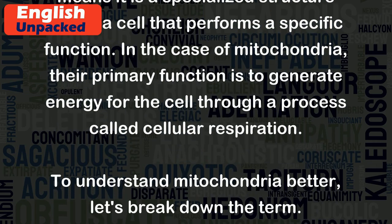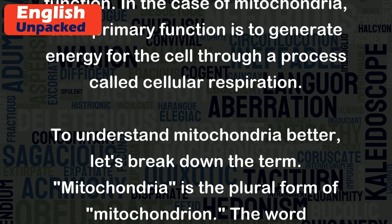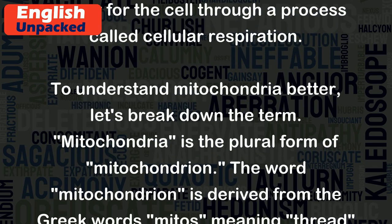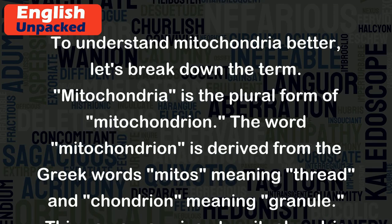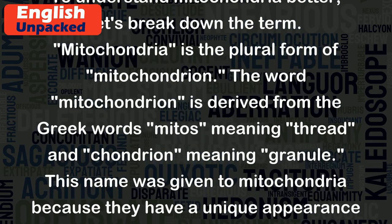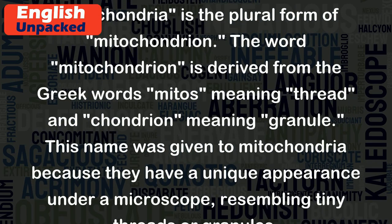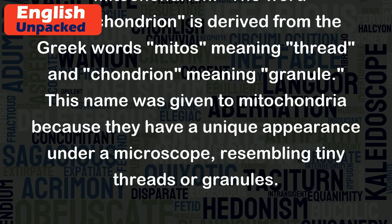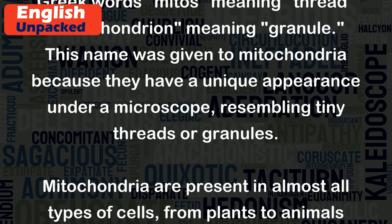To understand mitochondria better, let's break down the term. Mitochondria is the plural form of mitochondrion. The word mitochondrion is derived from the Greek words mitis, meaning thread, and chondrion, meaning granule. This name was given to mitochondria because they have a unique appearance under a microscope, resembling tiny threads or granules.